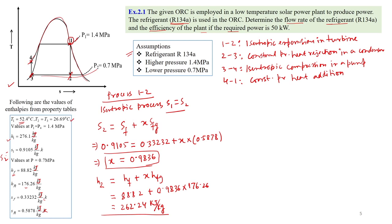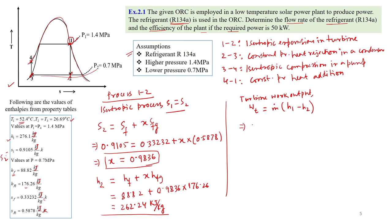Once we know H2 and H1, we can calculate the turbine work output. Turbine work Wt = mass flow rate × (H1 − H2). Substituting the values of H1 = 276.1 and H2 = 262.24, with the required output of 50 kW, the mass flow rate is calculated to be 3.597 kg/s.